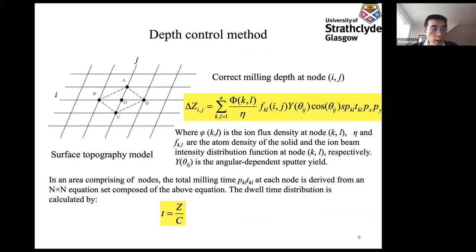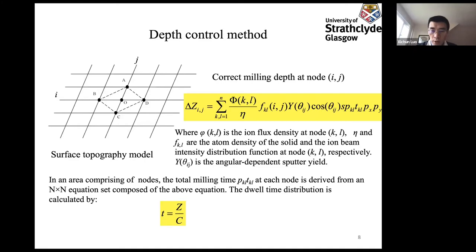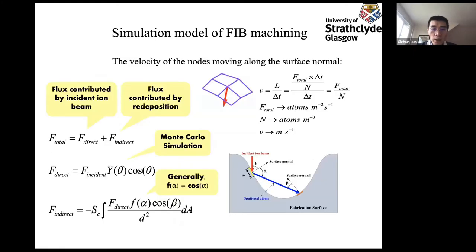We determine the machining fabrication parameters which counterbalance the beam skirt overlap effect. Using these optimized fabrication parameters, we drive the stream file generator to fabricate the nanostructure with the designed geometry. In the depth control approach, the fabricated surface is represented by a number of evenly-distributed mesh nodes. With the input parameters, we calculate the real machining depth under the current ion flux density, considering variations of the ion incident angle. We then use a formula to calculate the dwell time to overcome the overlap effect.